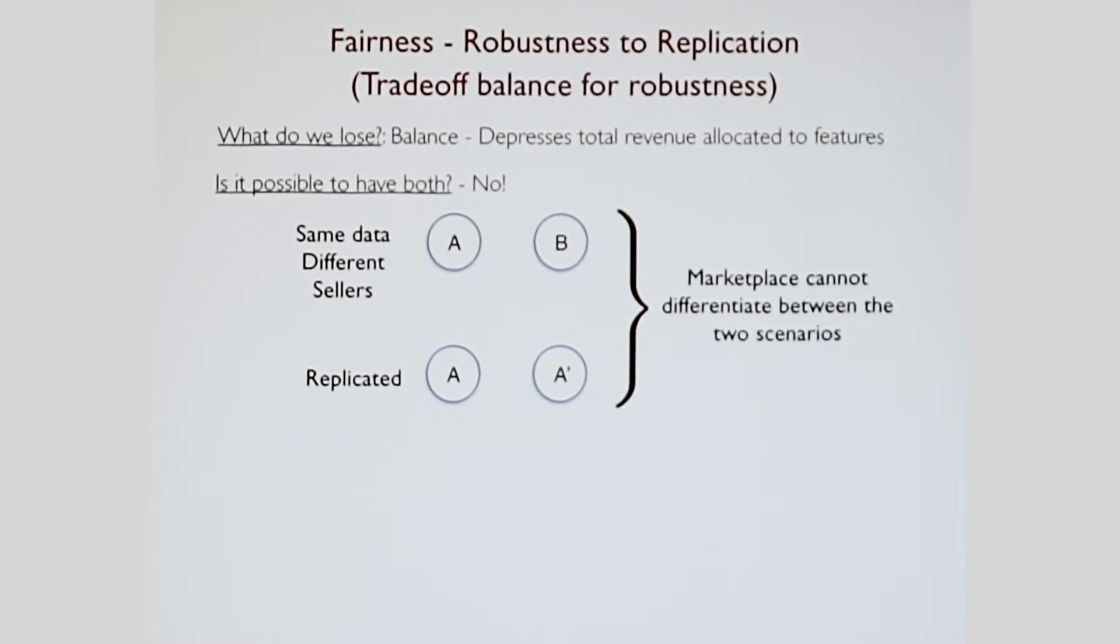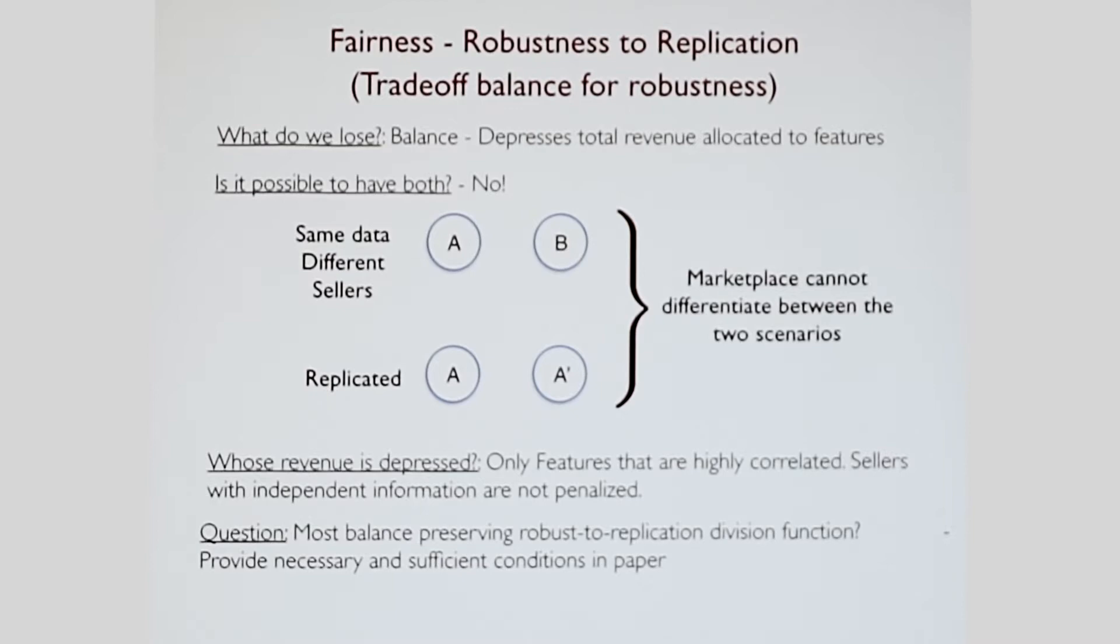Whose revenue is being depressed? Is it everyone's revenue that's being depressed uniformly? No. It's only features that have highly correlated information with other sellers. Only their information is penalized. If I have information that is orthogonal to everyone else's information with respect to the similarity metric the marketplace has chosen, then my revenue will not be penalized at all. The next question you could ask is that amongst all the different credit allocation mechanisms that exist, which is the most balanced preserving of the robust replication mechanisms? We provide both necessary and sufficient conditions to solve this in the paper. The thing I'll leave you with is that the payment division, the algorithm we're deciding, kind of incentivizes the collection of useful, unique data.